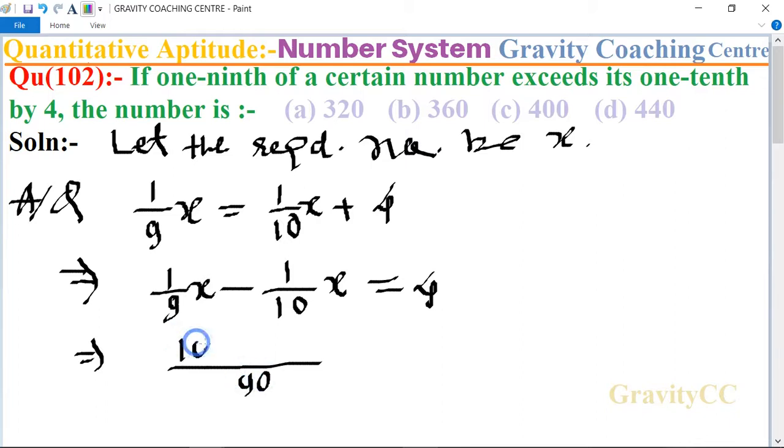So 10x minus 9x equals 4, which implies that x equals 360.